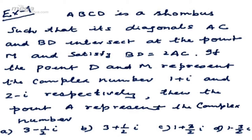Example 1: ABCD is a rhombus such that its diagonals AC and BD intersect at point M and satisfy BD equals twice of AC. If the point D and M represent the complex numbers 1+i and 2-i respectively, then the point A represents the complex number: (A) 3 - (1/2)i, (B) 3 + (1/2)i, (C) 1 + (3/2)i, and (D) 1 - (3/2)i.